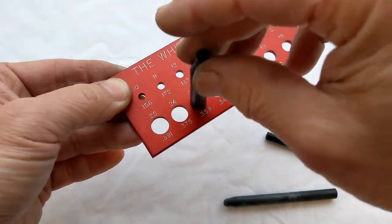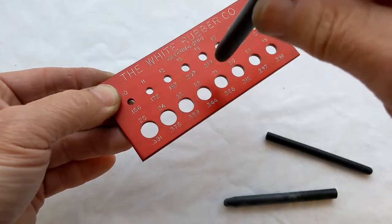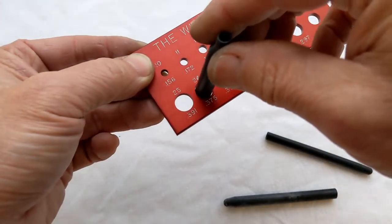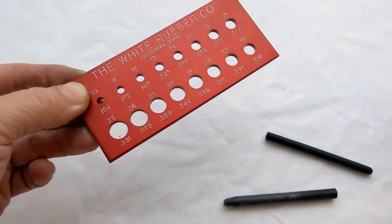It can be pushed through the 23 size, but it's supposed to fall through freely. 24, it falls through freely, so that's a 24 size sac.